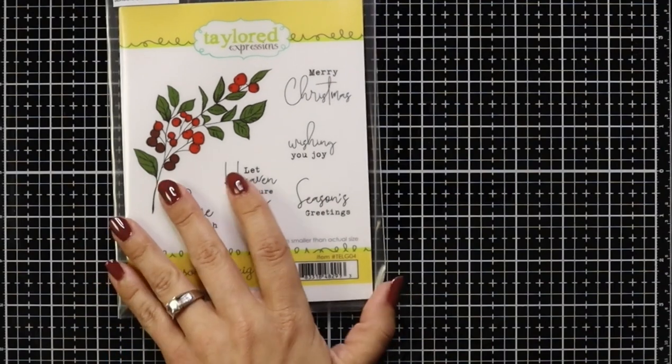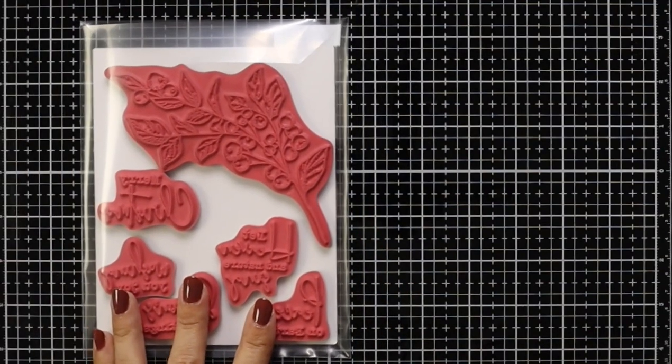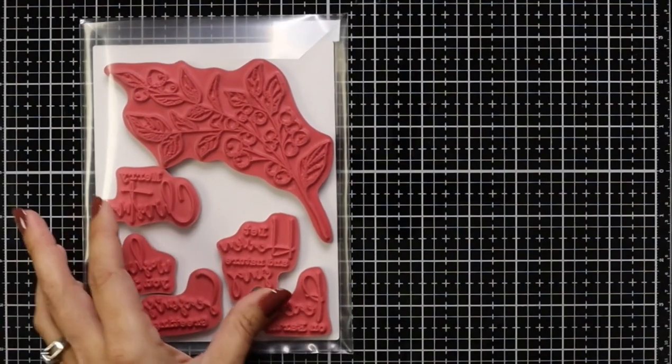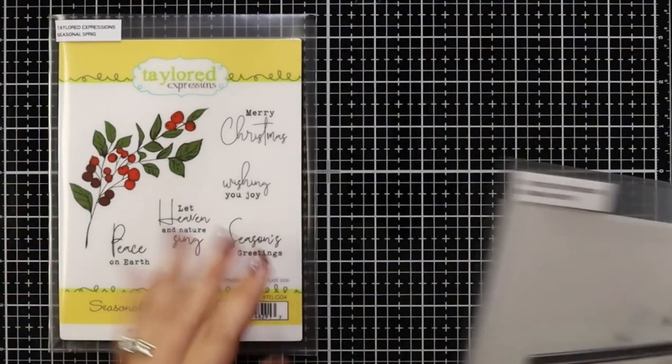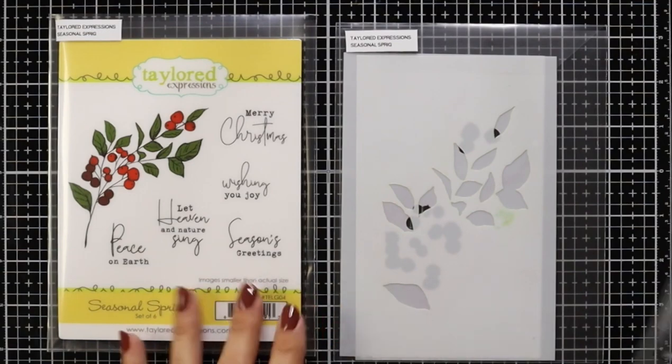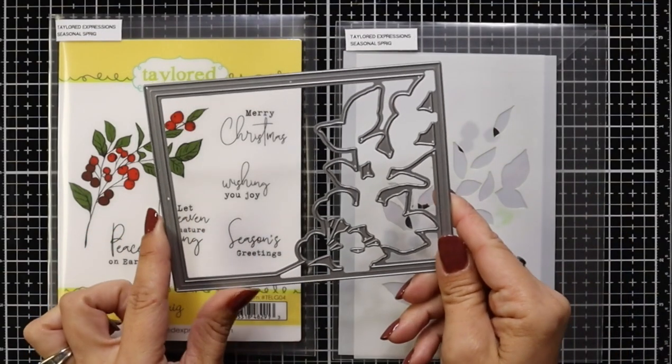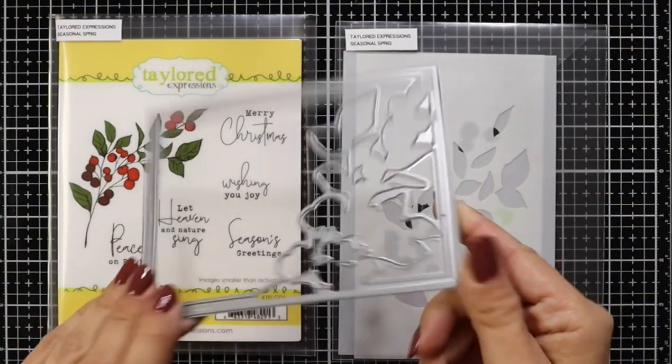Here's a look at the Seasonal Sprig Stamp Set. It is a red rubber stamp. You can see it has this large seasonal sprig and some beautiful Christmas sentiments. There's also the Seasonal Sprig Stencil and the Coordinating Die.